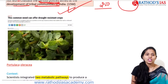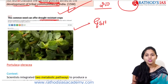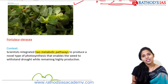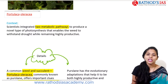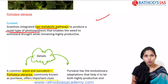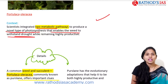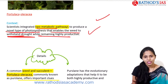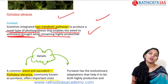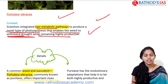The next topic is about a common weed that can offer drought-resistant crops. This is important from GS Paper 3 under environment and ecology. Scientists integrated two metabolic pathways — such as C3 and C4 cycles — to produce a novel type of photosynthesis that enables a weed to withstand drought while remaining highly productive.